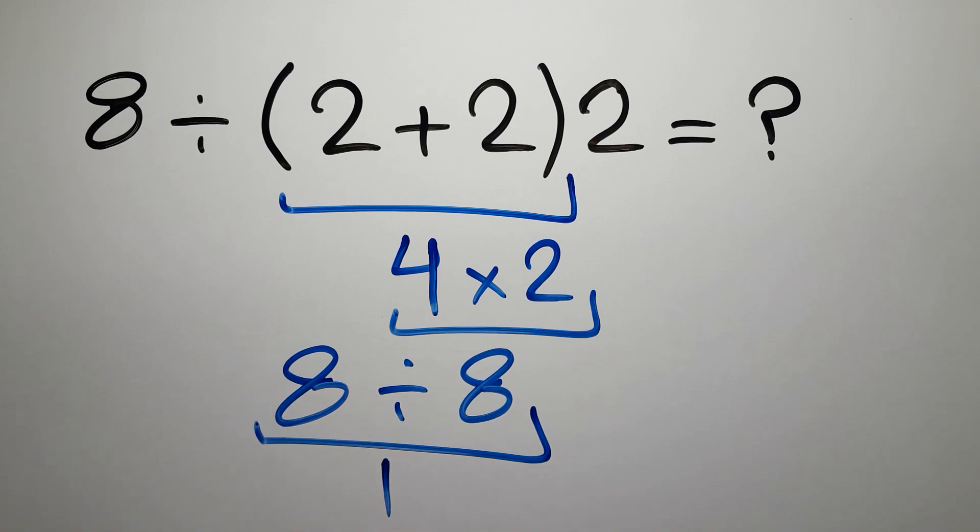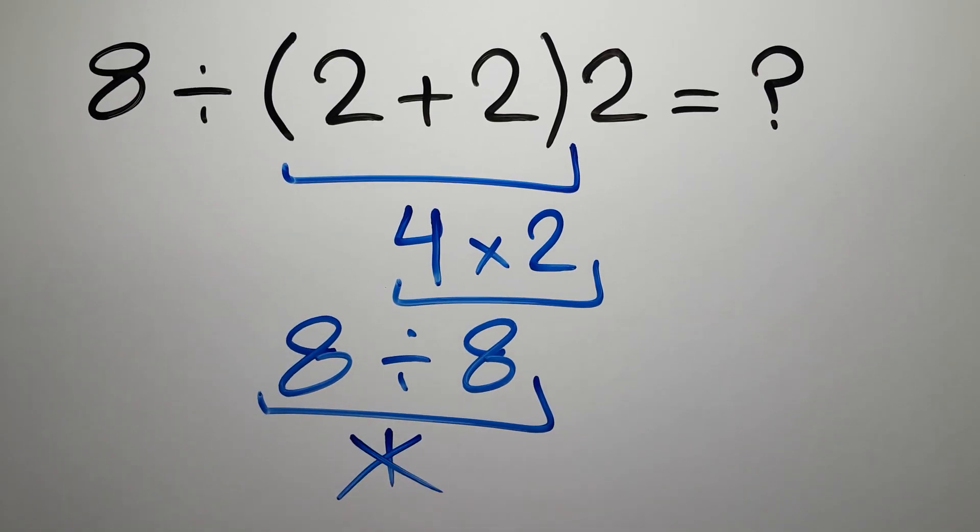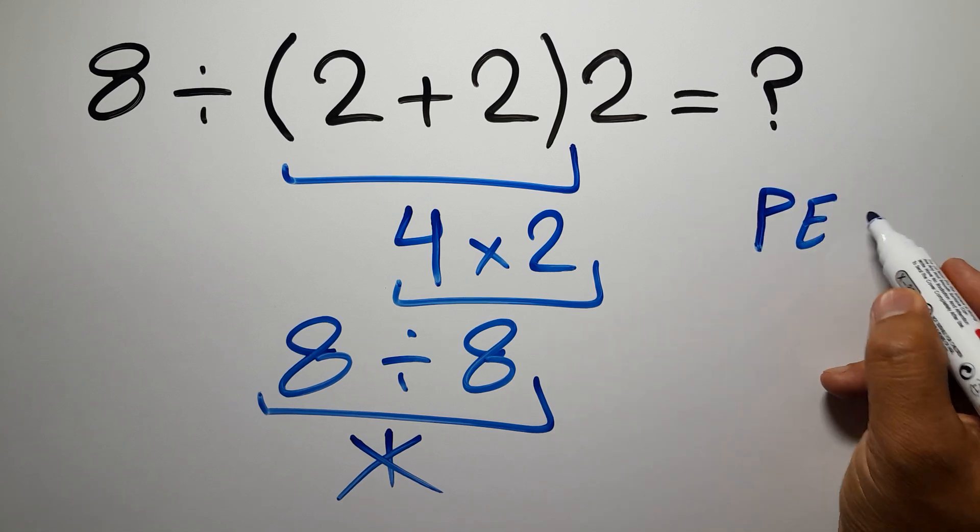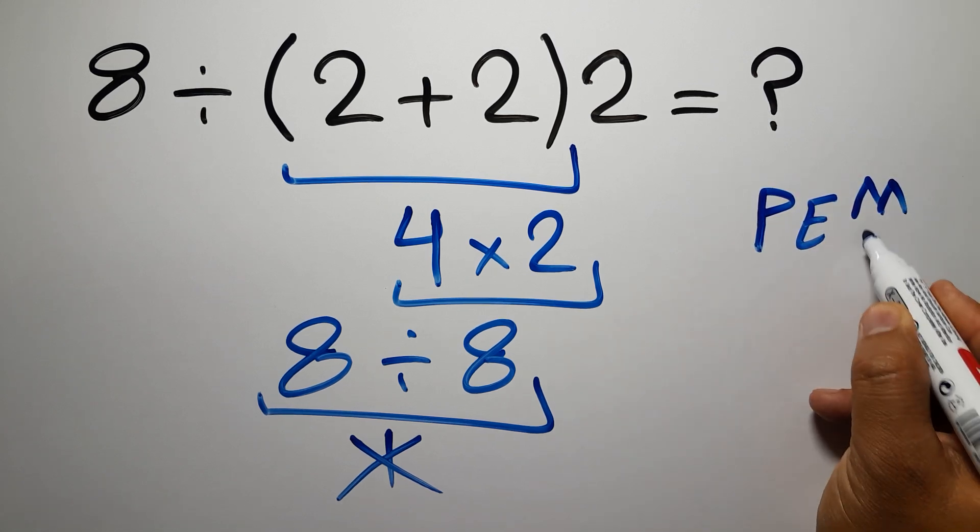But this answer is not correct, because according to the order of operations, first we have to do parentheses, then exponents, then multiplication or division.